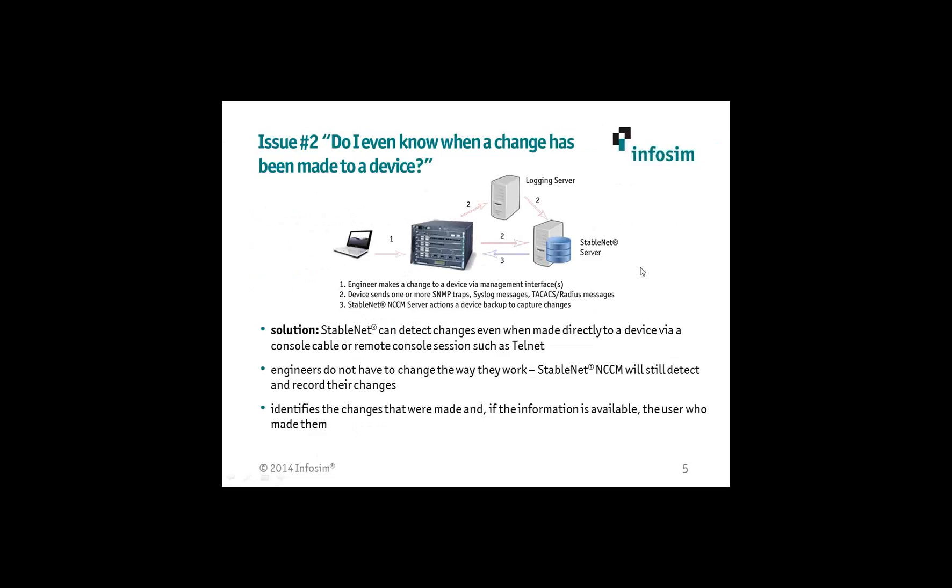The second issue we commonly hear about is: how do I know when something has changed on a device on my network? Change happens all the time, especially in big organizations. There are a lot of people who have the authority and access to log into a system via CLI or web console and make some sort of change — an adjustment to a device, a physical change, bringing up a new service, changing an interface IP address, or anything. What's important from a management view is that you need to be able to track those changes. You don't necessarily want to prevent people from making changes, but you need to track them.